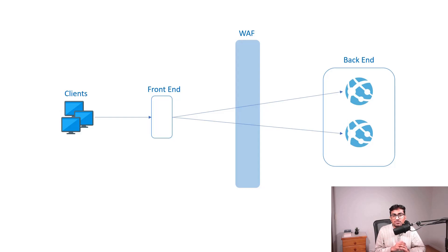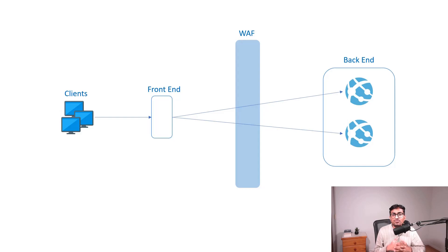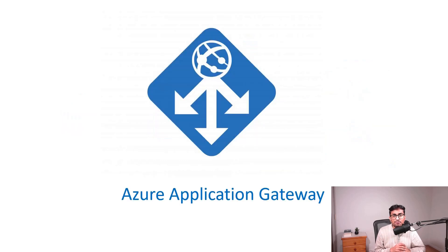Microsoft Azure has two offerings for this: one is Application Gateway and another one is Azure Front Door. Application Gateway is a regional load balancer whereas Azure Front Door is a global load balancer. In this video we will learn about Application Gateway.